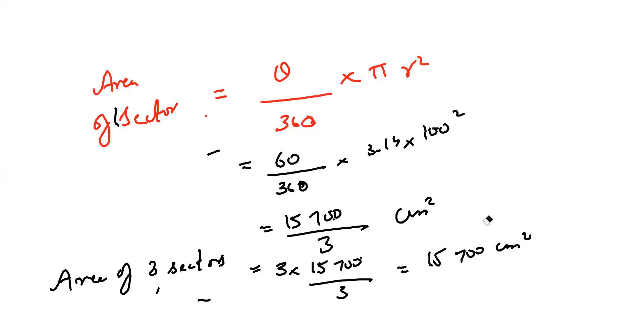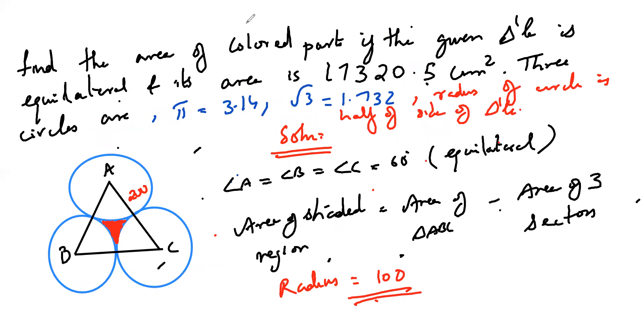So now area of the shaded region is very simple. Come back to this. Area of a triangle ABC, I know what it is. Given in the question, 17320.5. And area of the three sectors is 15700. So I will get around 1620.5 centimeters square respectively.